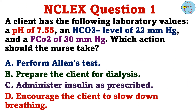Question 1. A client has the following laboratory values: a pH of 7.55, an HCO3 level of 22 millimeters of mercury, and a PCO2 of 30 millimeters of mercury. Which action should the nurse take? A. Perform Allen's test. B. Prepare the client for dialysis. C. Administer insulin as prescribed. D. Encourage the client to slow down breathing.